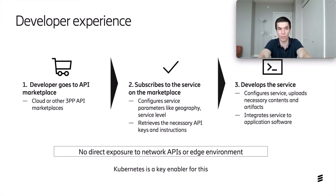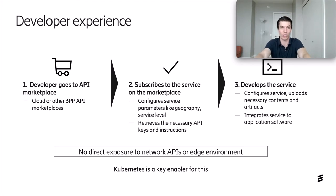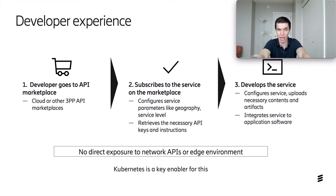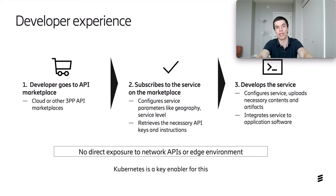From the developer's perspective, it is a true cloud or platform-as-a-service experience: going into an API marketplace — be that a cloud marketplace or any other relevant third-party marketplace — then subscribing to the service, configuring the service parameters like geography and service level, retrieving the necessary API keys and instructions, implementing and configuring the service, uploading the necessary contents and artifacts, and integrating the service to the client applications and to the rest of the application stack. There is no direct exposure to network APIs or the edge environment. It's a complete platform-as-a-service experience, and Kubernetes is a key enabler to make this happen.